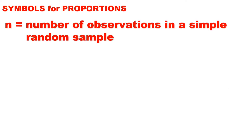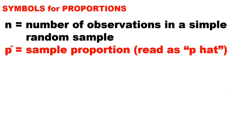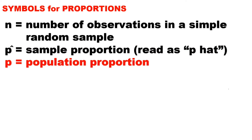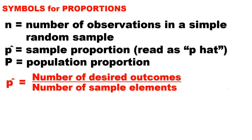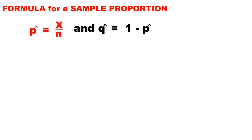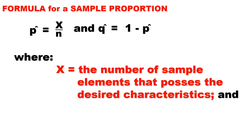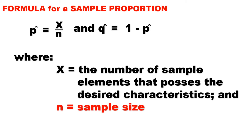In dealing with proportions, we have the following symbols. N is the number of observations in a simple random sample. P-hat equals the sample proportion, read as P-hat. P refers to the population proportion, and P-hat equals the number of desired outcomes over the number of sample elements. The formula for solving a sample proportion is: P-hat equals X over N, and Q-hat equals 1 minus P-hat, where X equals the number of sample elements that possess the desired characteristics and N equals the sample size.